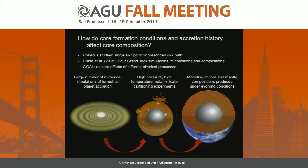Our goal here is a little different. We're using a significantly larger number of simulations — we've run 100 so far — and we're combining them with partitioning data to explore the effects of different physical processes on core formation chemistry. We start with a large number of simulations and combine them with our partitioning experiments so that we can model core and mantle compositions that are produced under evolving pressure, temperature, and oxygen fugacity conditions.